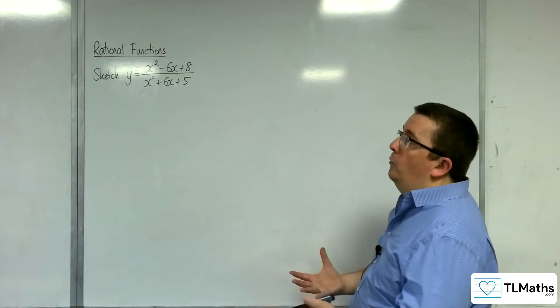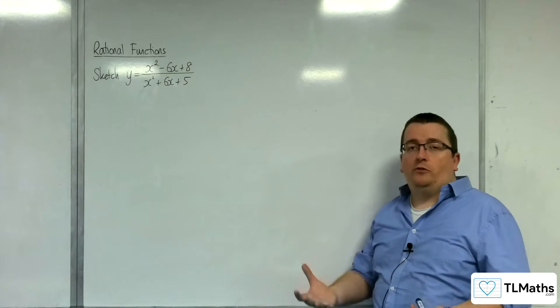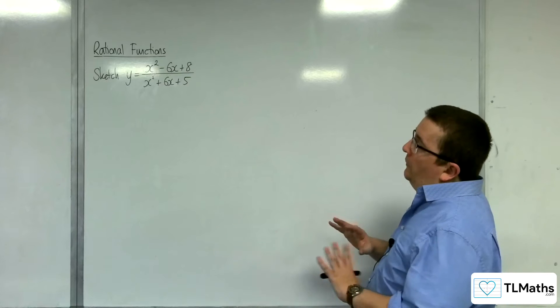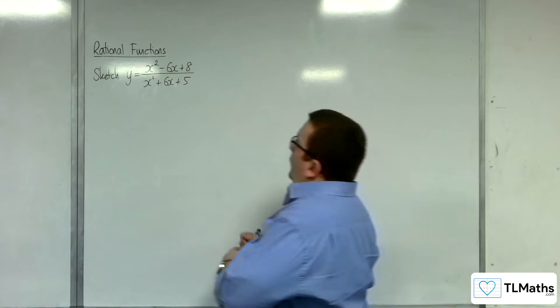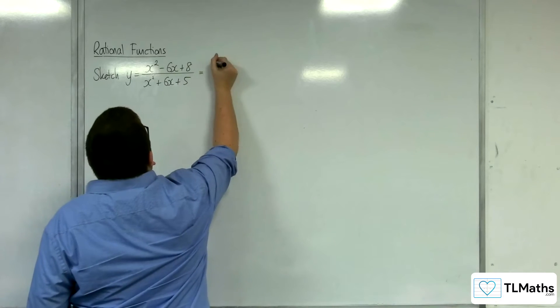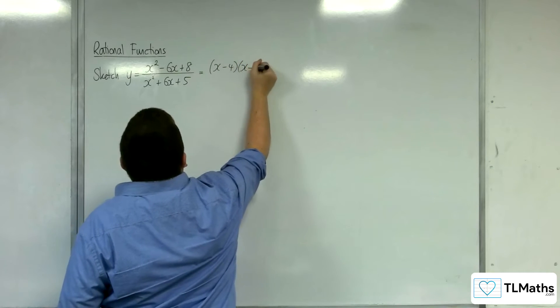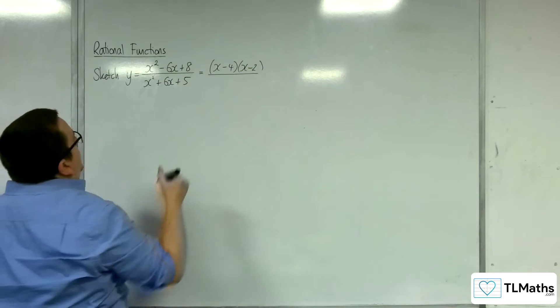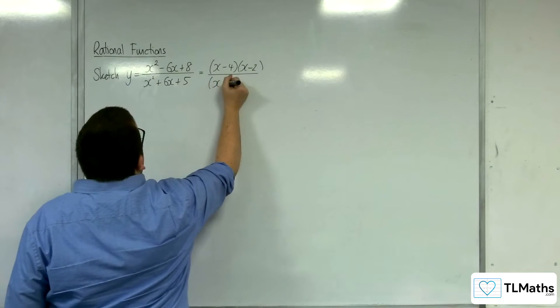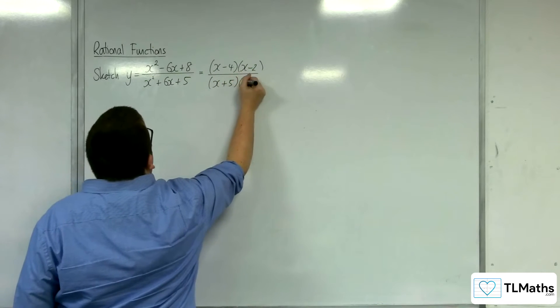First thing you want to do is spot whether you can factorise the numerator or denominator before we do any sketching at all. So both of them do. The numerator factorises to x take away 4, x take away 2, and the bottom factorises to x plus 5, x plus 1.